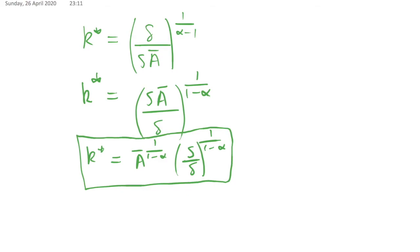And once we know this, we have k star in terms of our productivity parameter A, in terms of savings rate and depreciation rate. Once we know this, we can find the values of everything else in our model per capita.